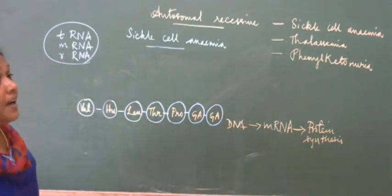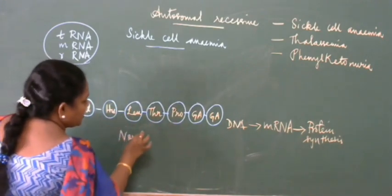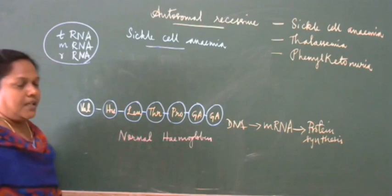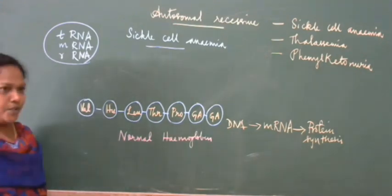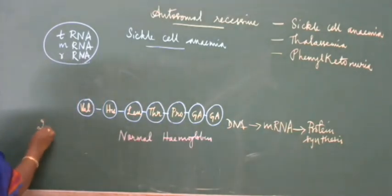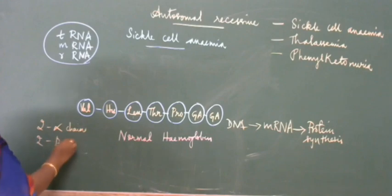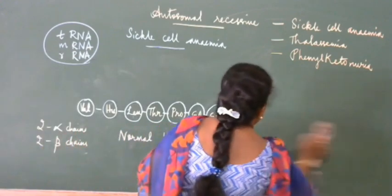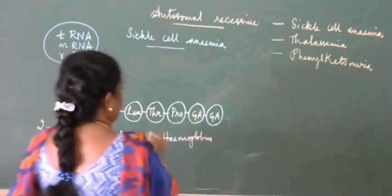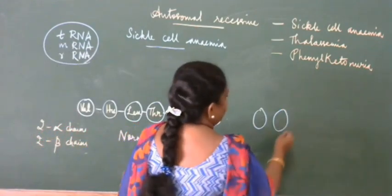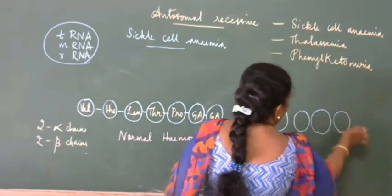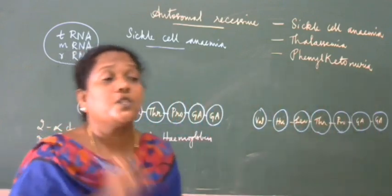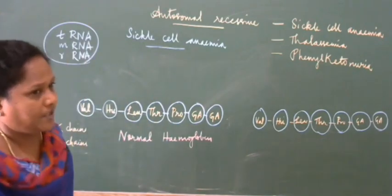In a normal individual, if the normal gene is expressed, this group of amino acids forms hemoglobin. Hemoglobin has two alpha chains and two beta chains. Now, comparing the same structure in a sickle cell anemia patient: valine, histidine, leucine, phenylalanine, proline, glutamic acid, glutamic acid — what is the difference between these two?